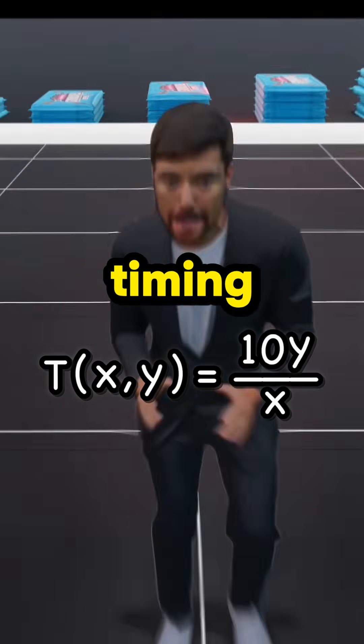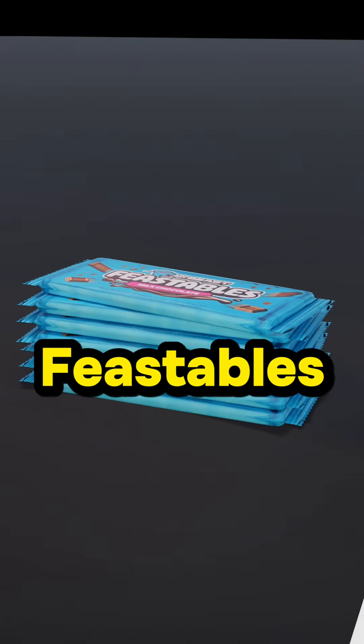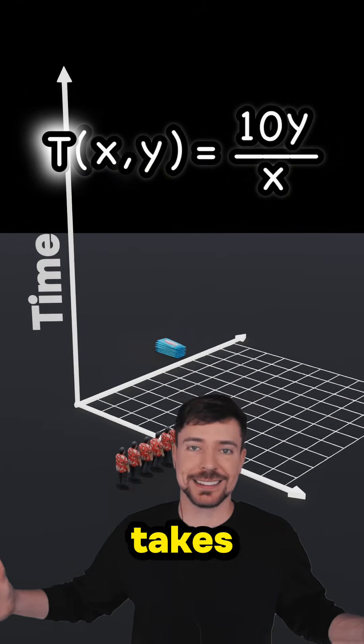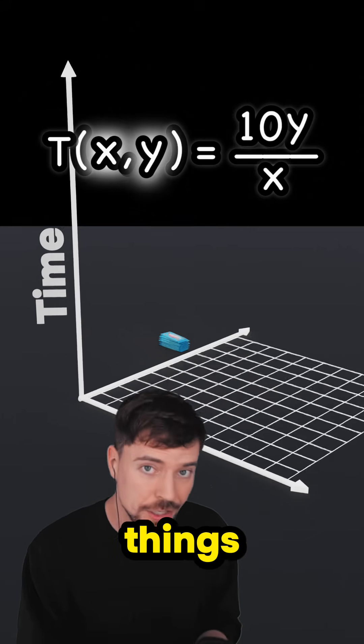Let's learn what 3D functions are by timing these six men eating seven Feastables. What's this thing on the screen, Jimmy? This is a 3D function, so the time it takes to eat depends on two things: the number of people there are and the number of Feastables that need to be eaten.